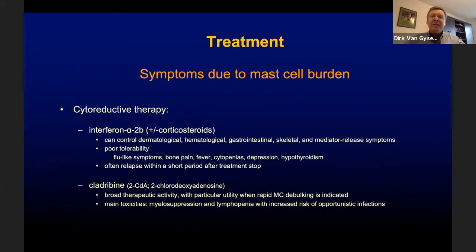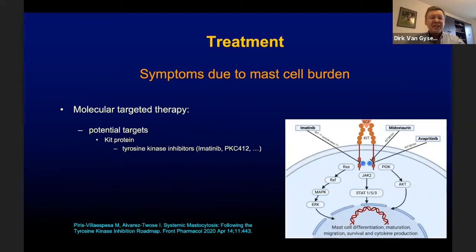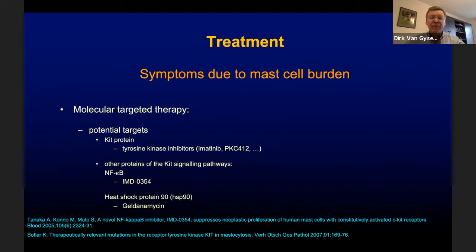In patients with therapy-refractory symptomatic mastocytosis or symptoms due to mast cell burden, cytoreductive therapy can be considered, with choices between interferon alpha-2b and cladribine. Cladribine is most commonly used because of its broad therapeutic activity, but has toxicities such as myelosuppression and lymphopenia. Recently, there have been major advances in molecular targeted therapy, in which drugs are chosen based on the underlying defect of the disease — for example, tyrosine kinase inhibitors targeting the KIT protein or other proteins of the KIT signaling pathway.